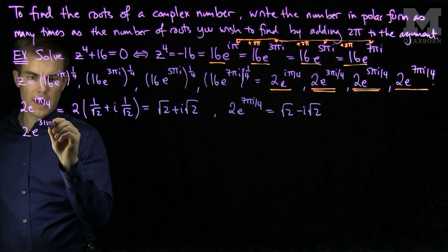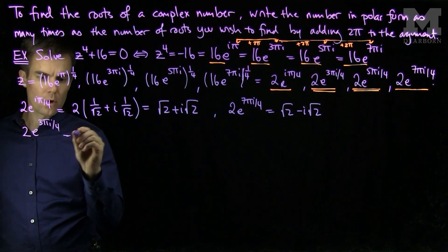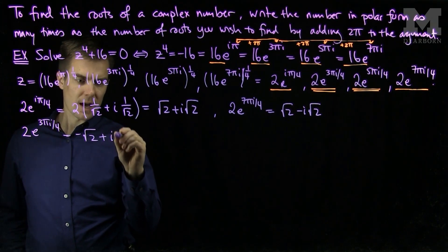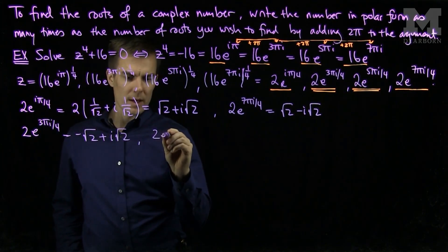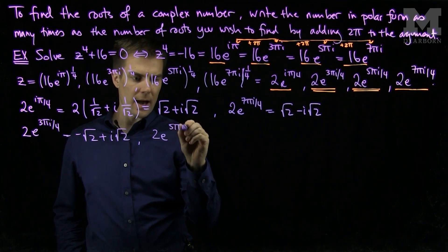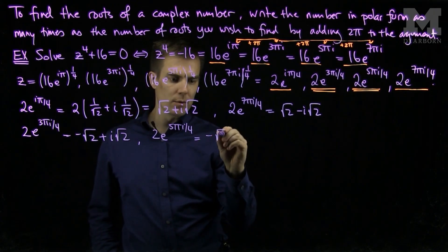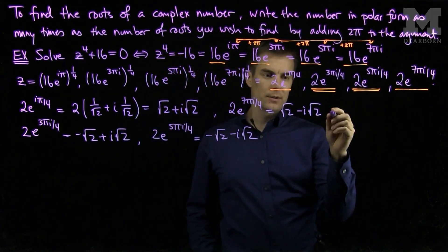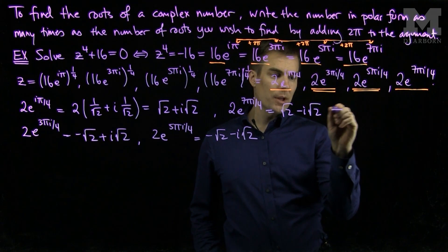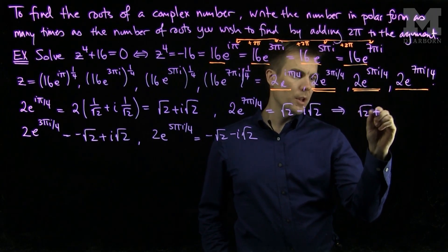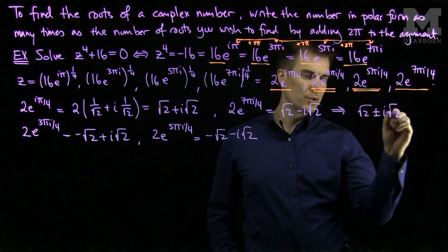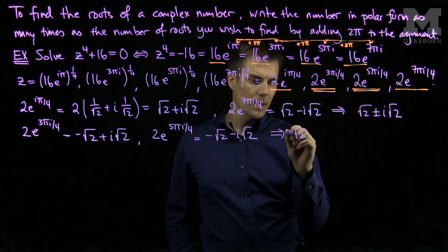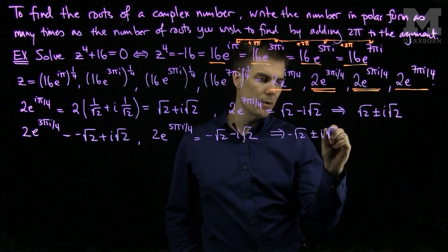2e to the 3πi over 4 will be negative root 2 plus i root 2. And 2e to the 5πi over 4 will be negative root 2 minus i root 2. The first two factors give me the complex conjugate pair root 2 plus or minus i root 2, and the second pair of roots give me negative root 2 plus or minus i root 2.